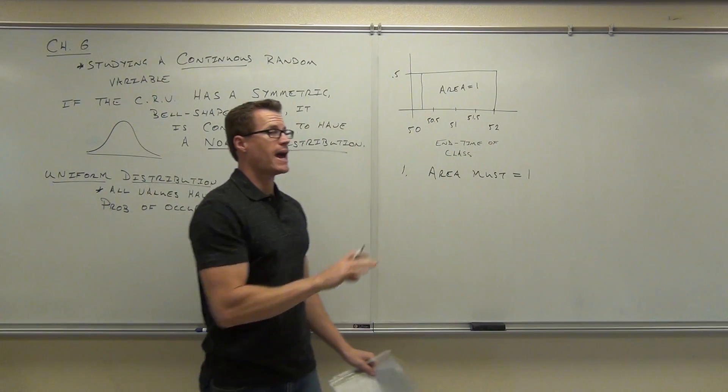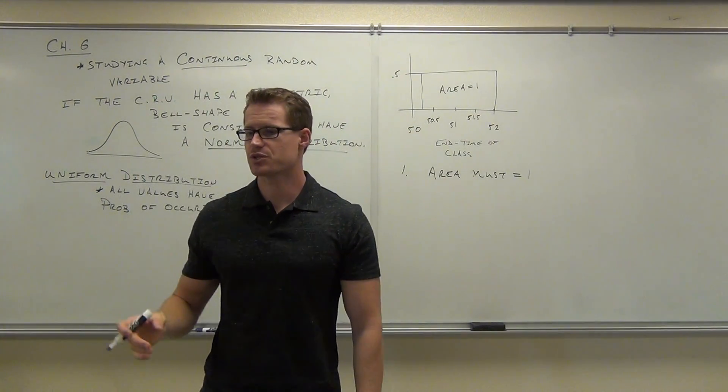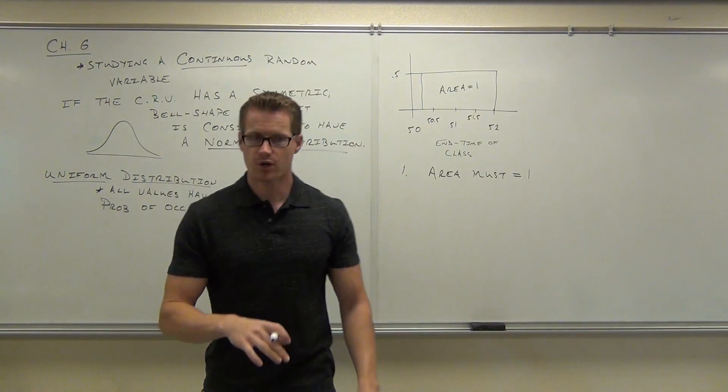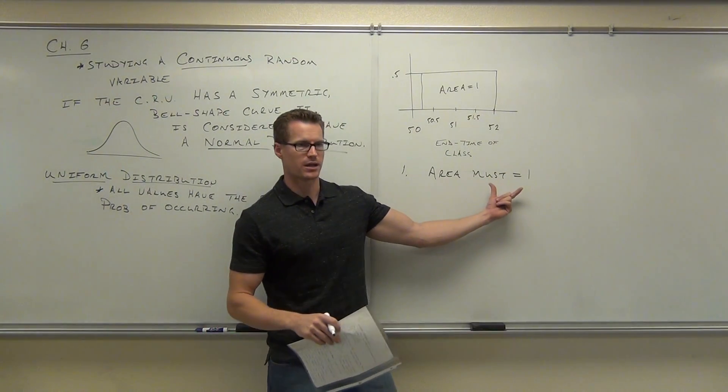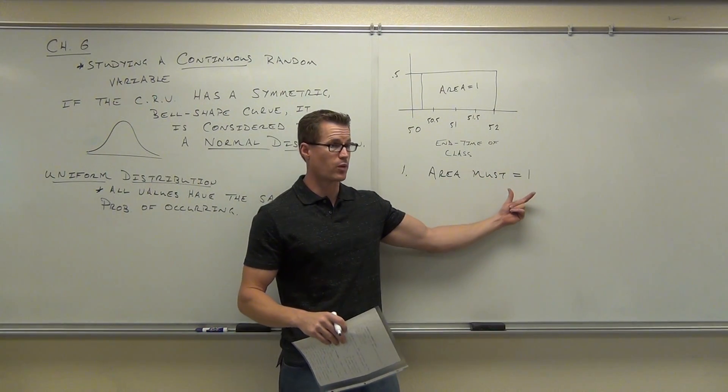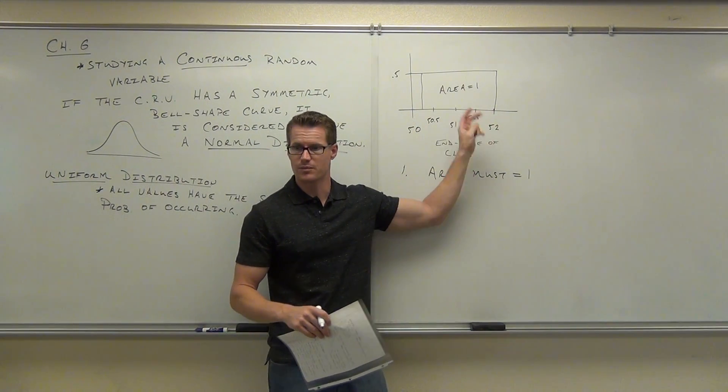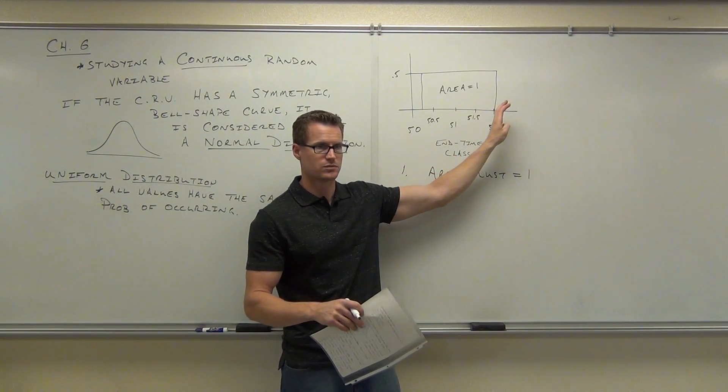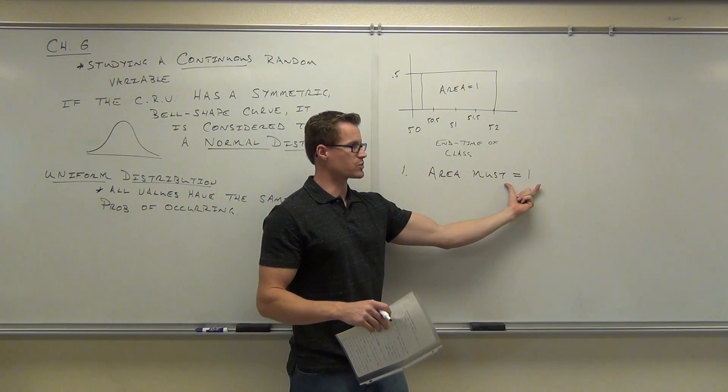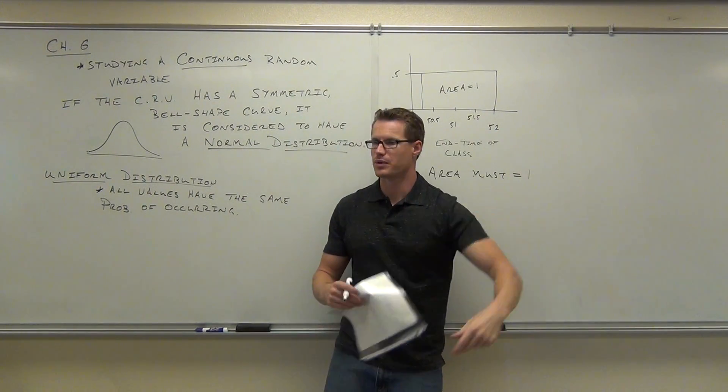The area must equal 1. And the reason why it has to equal 1 is because we're going to associate the area with the probability. We're going to get a proportion of this area, right? Like 0.3 or 0.25 or 0.5. That's how much area we're going to have covered in here. If the whole thing equals 1, part of it is part of 1.